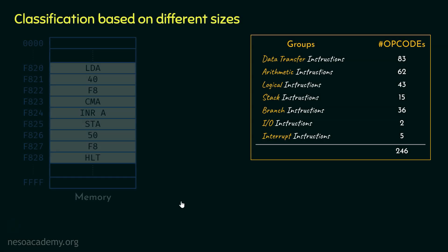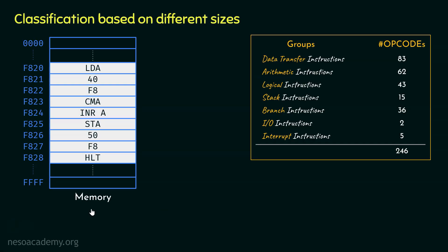Now let's learn about the classification based on different sizes, using the same program stored in memory. The first instruction, LDA F840, is stored with the address in byte-reversal order. Specifically, Intel prefers to store addresses in the little-endian method: the lower-order byte of the address is stored first, and the higher-order byte is stored thereafter. This is not always the case for all microprocessors.